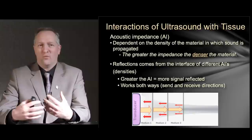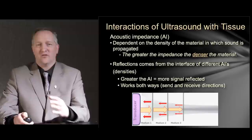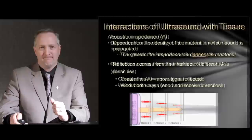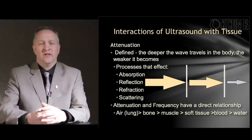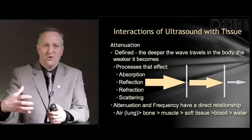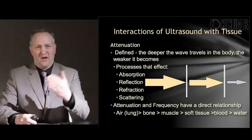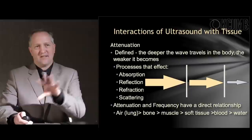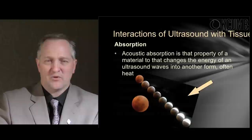Acoustic impedance is the absorption or distraction of the sound wave as it is sent out and what you get in return. The denser and thicker the material, the greater the impedance — the more density the wave has to travel through both going and coming back, the less image and response you get. Attenuation means the deeper the wave travels into the body, the weaker it becomes — it loses strength because the tissue absorbs some of the sound wave as it moves through.